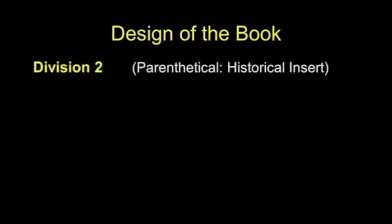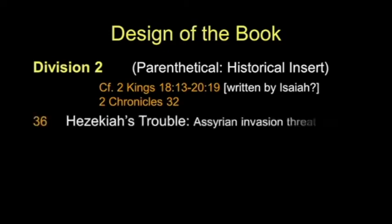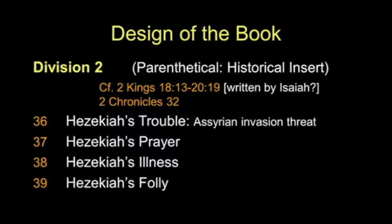There's a third section — a big section. Between the two is a little one, division two, a parenthetical historical insert in four parts. It parallels 2 Kings 18 and 2 Chronicles 32 — in fact, it looks as if 2 Kings 18 may have been written by Isaiah himself, as he was an assistant to the king. Those four chapters: chapter 36 is Hezekiah's trouble, dealing with the Assyrian invasion. Then Hezekiah's prayer, his illness, and finally his folly. It's a little four-chapter historical insert before we get to the main event.